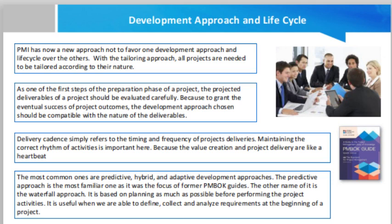When uncertainty exists at the beginning of a project, the adaptive approach is the most applicable one. In this type of project, requirements change frequently and the project needs to adapt to changing requirements. There are two iterative approaches: iterative and incremental. The third most common approach is the hybrid approach, which sits somewhere between predictive and adaptive — even if more adaptive than predictive, it still retains some characteristics of a predictive approach.